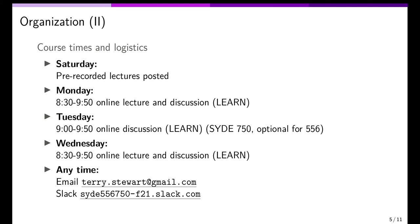There are both undergrads and graduate students in this class. 556 is the course code for undergrads and 750 is the code for graduate students. Graduate students have a separate discussion section from 9:00 to 10:00 on Tuesdays. Everyone is invited to join that discussion, but the 750 students should definitely be there — it will be open and free-form. All links for those discussions will be available in Learn, and sessions will be recorded and available to anyone registered for the course.